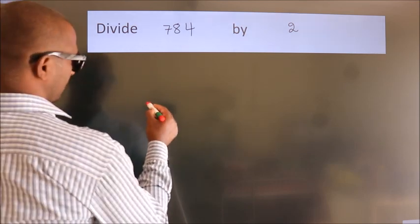Divide 784 by 2. To do this division we should frame it in this way. 784 here, 2 here. This is your step 1. Next.